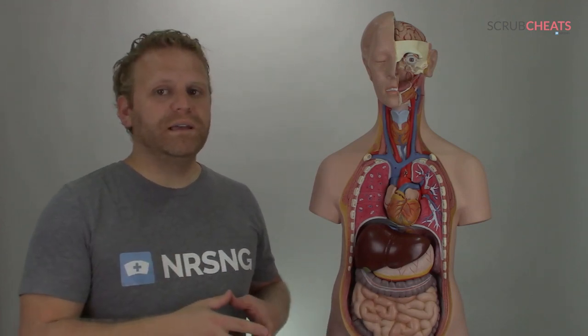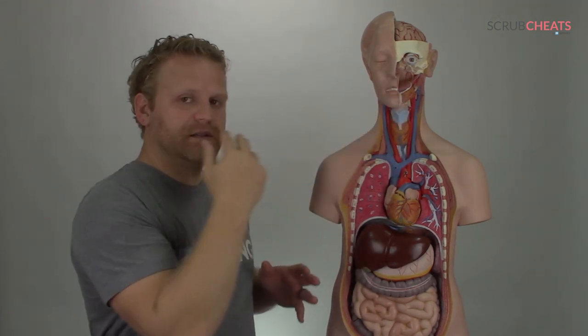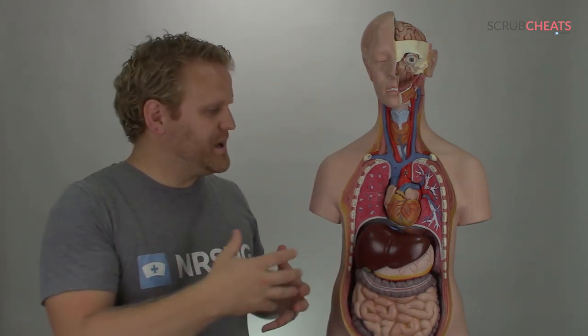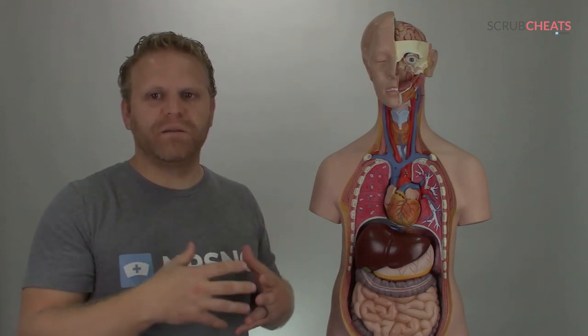The first one we all know is nasal cannula. Nasal cannula fits inside the patient's nose, just right inside their nostrils, to deliver a little extra FiO2 or percent of inspired oxygen. Like for patients who are having some chest pain or having a little bit of difficulty feeling like they can breathe.